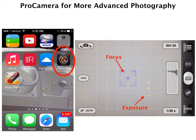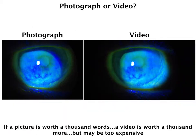The Pro Camera app gives us ISO settings, which is essentially the level of exposure, and it also gives us shutter speed. But for most things, this is a little bit too advanced. Another question that we commonly get is: should I photograph, or should I video?